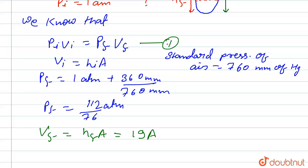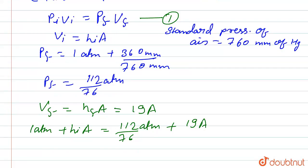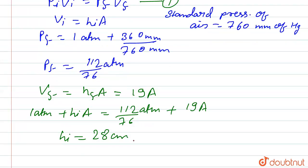In this equation, so P_i is 1 atm plus h_i into A is equal to P_f that is 112 atm upon 76 plus 19A. V_f is 19, so we have to calculate h_i. Here we have to calculate h_i is equal to 28 cm.